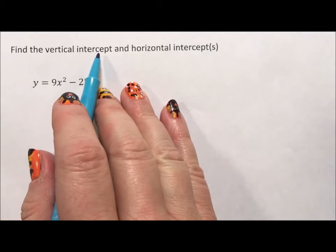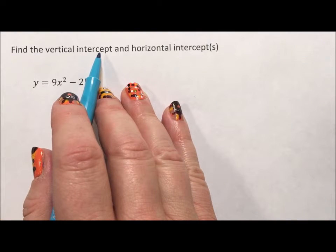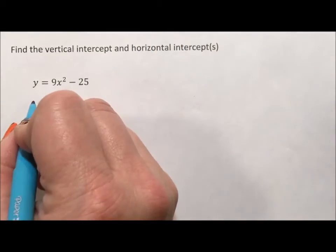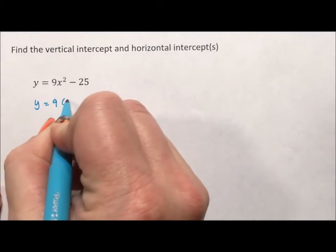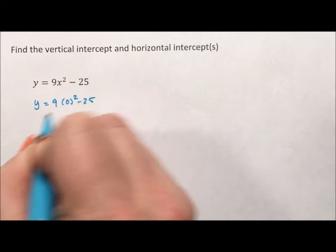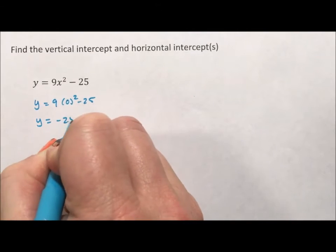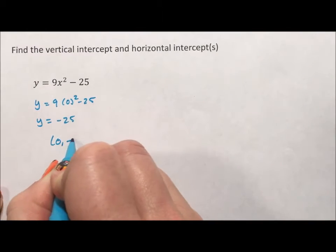To find the vertical intercept where it crosses the y-axis, we set x equal to 0. So y equals 9 times 0 squared minus 25, which is negative 25. That gives us the point (0, -25).